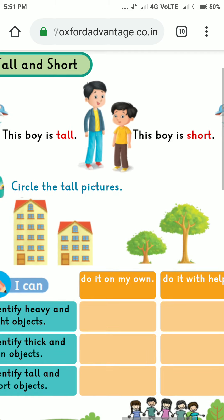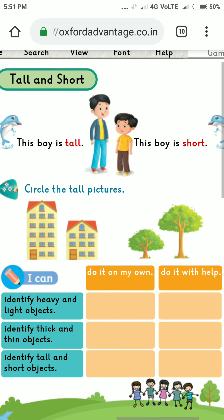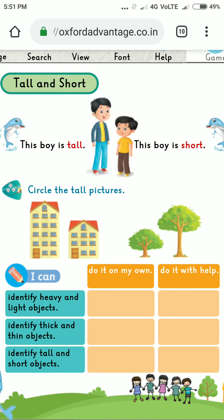You need to circle the tall picture. Here you see two pictures — one is tall and one is short. You have to circle the tall tree. Here you see two trees — one tree is tall and the other tree is short. You have to tick the tall tree.